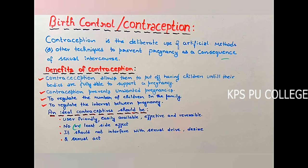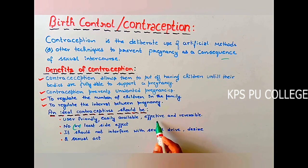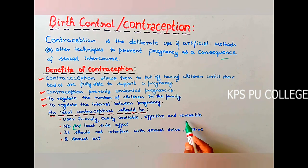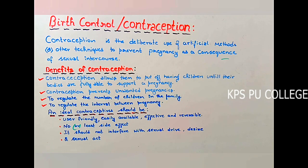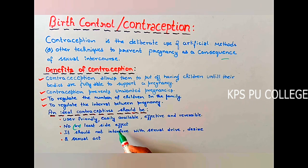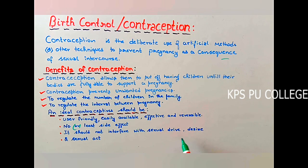An ideal contraceptive should be user friendly, easily available, and effective. It should be reversible, like vasectomy and tubectomy. The contraceptive used should not have any side effects, and it should not interfere with sexual drive, desire, or the sexual act.